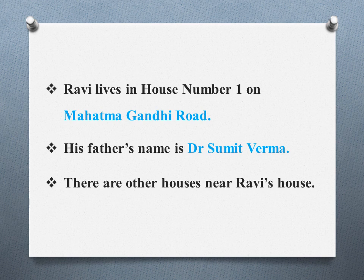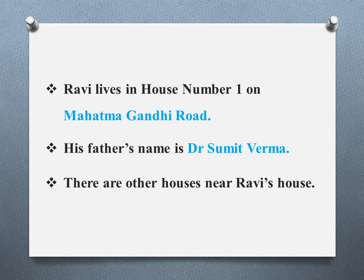As we go to Mahatma Gandhi Road, if we are not finding Ravi's house, we should ask for Dr. Sumit Verma's house. Then they will say it is next to two houses. That way we can find it and meet Ravi. This is called a neighborhood that makes the livelihood.